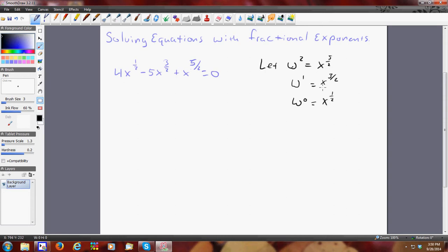So now I'm going to rewrite them in a different order. I'm going to write this one first as x to the 5 halves, but I'm not going to say x to the 5 halves. I'm going to say w squared. And this is w to the first and this is w to the 0. So I'm going to have w squared minus 5w plus 4w to the 0 equals 0.